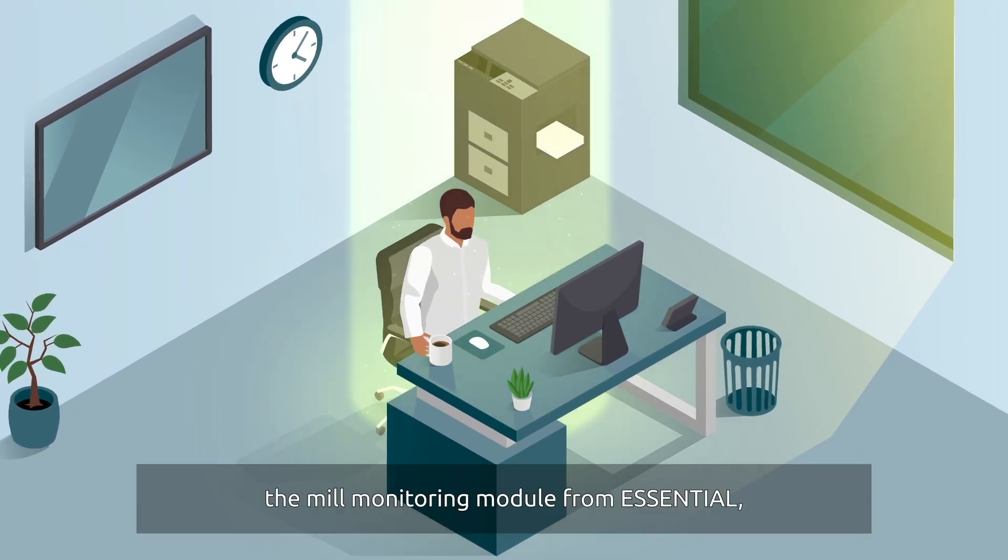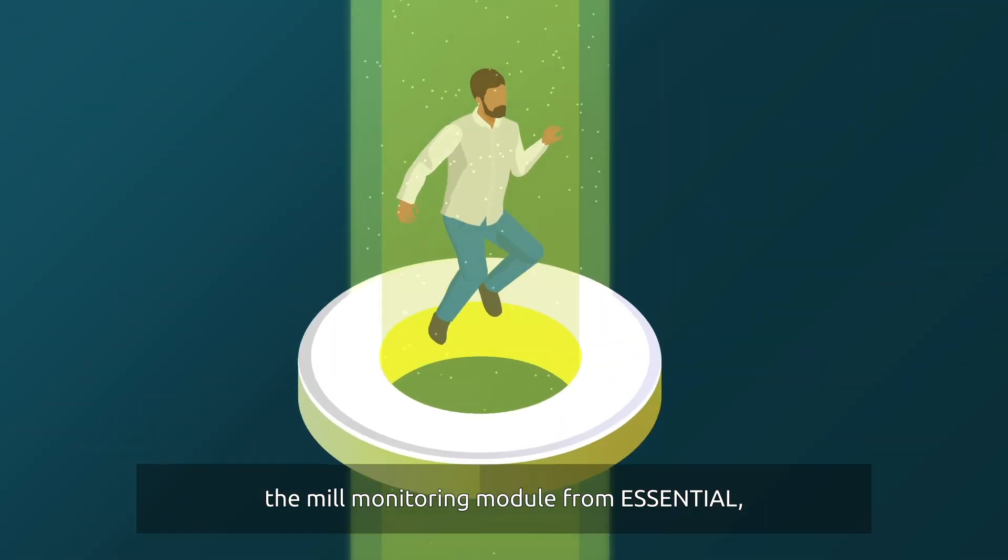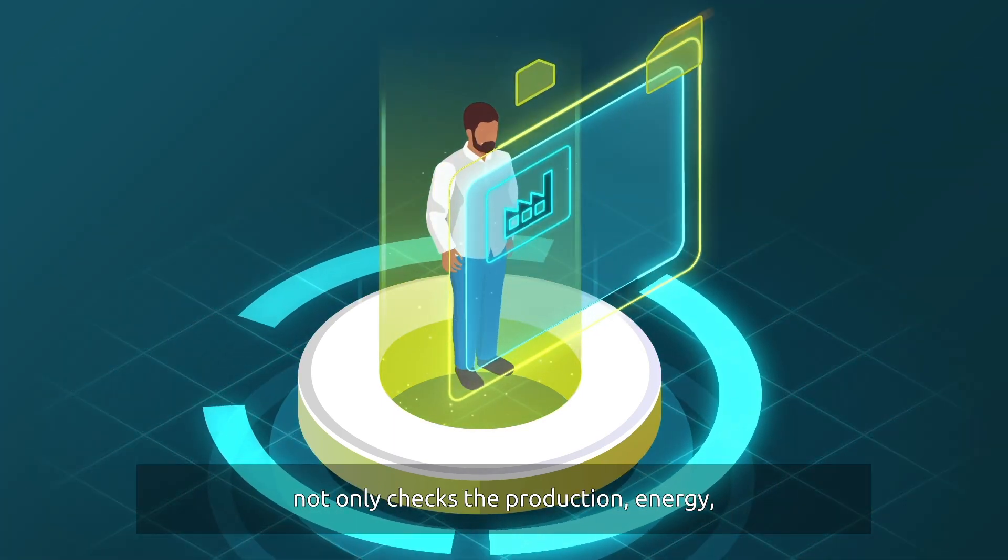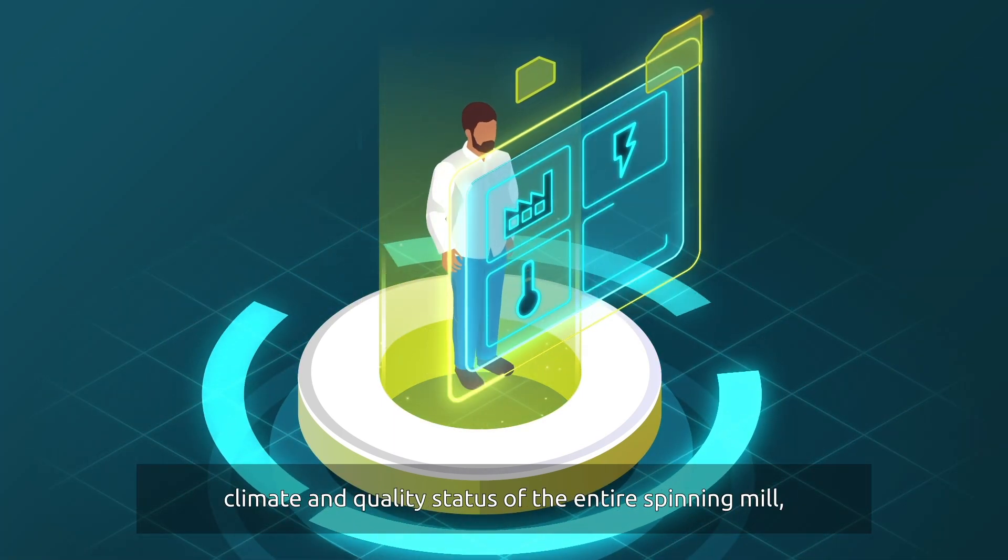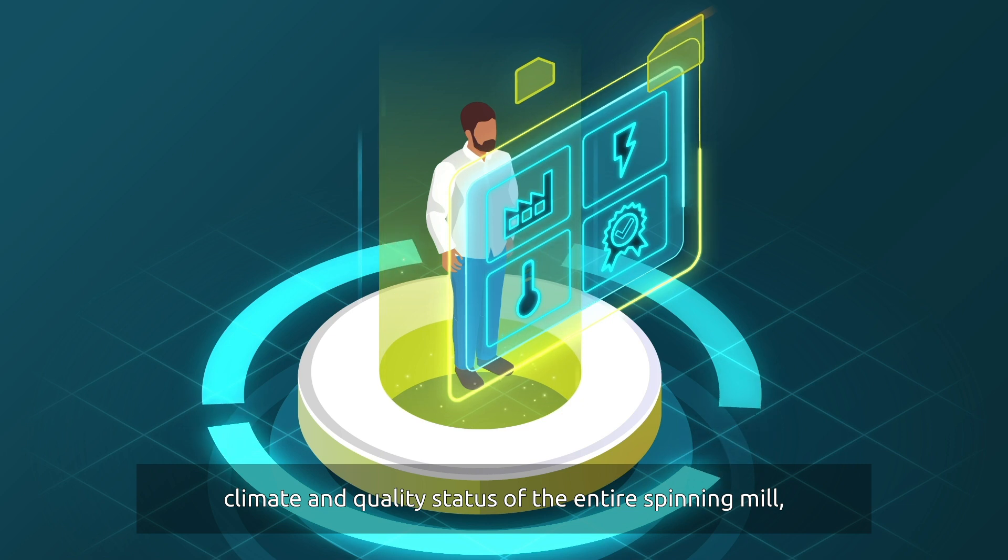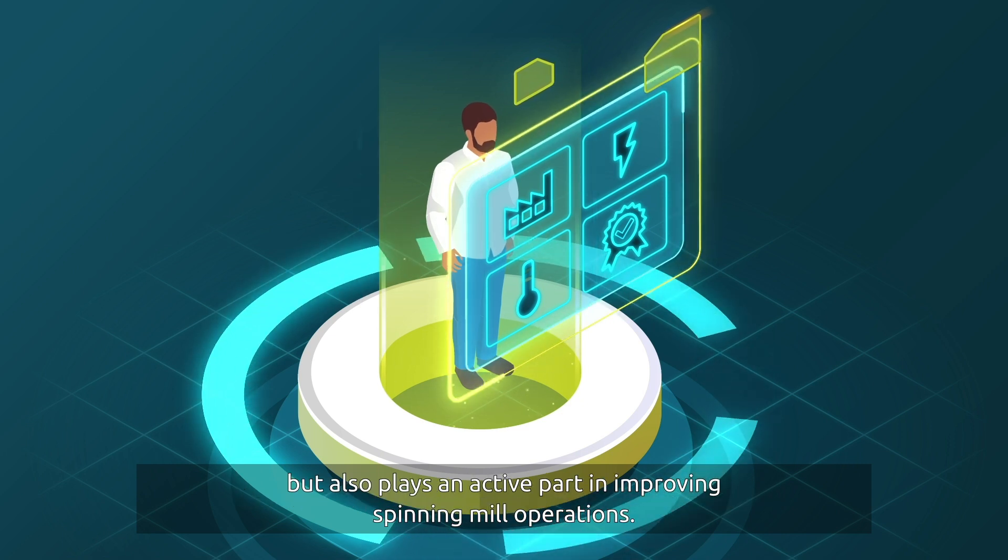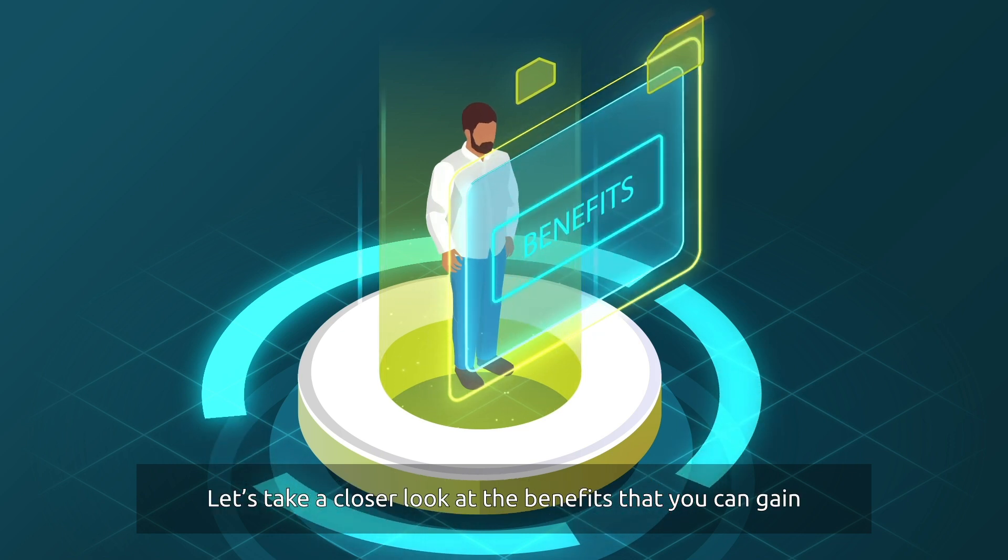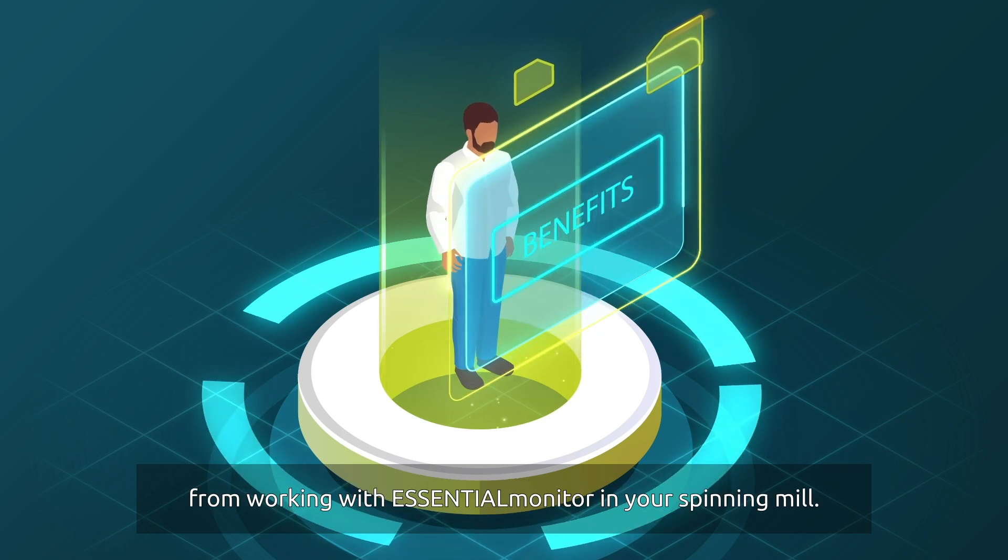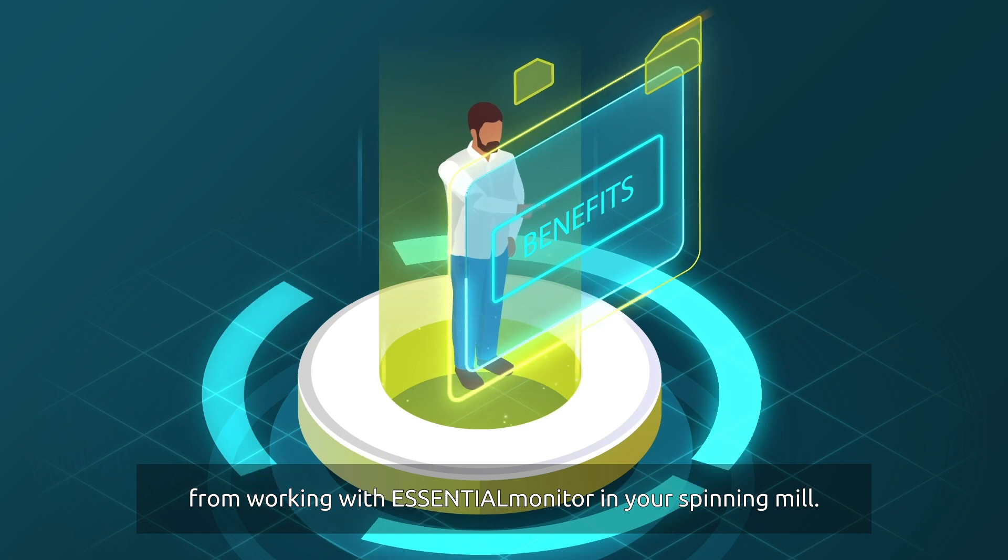Did you know that Essential Monitor, the mill monitoring module from Essential, not only checks the production, energy, climate and quality status of the entire spinning mill, but also plays an active part in improving spinning mill operations? Let's take a closer look at the benefits that you can gain from working with Essential Monitor in your spinning mill.